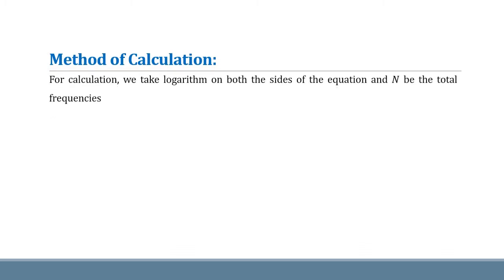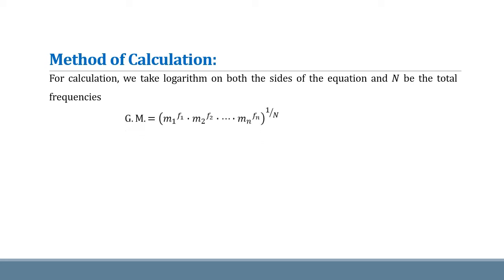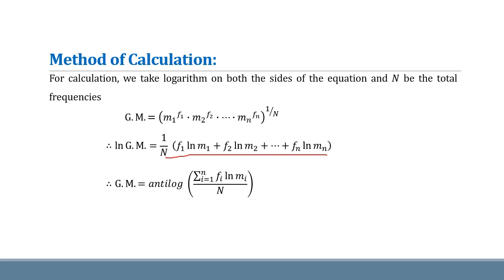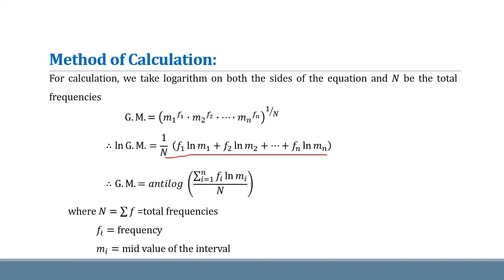Now we see the method of calculation for grouped data. For calculation, we take logarithm on both sides of the equation, where geometric mean equals this expression and capital N is the total number of frequencies. By applying properties of logarithm, we get: 1 upon N times the quantity f1 log m1 plus up to fn log mn. By taking antilog, we get the formula for geometric mean. In this formula, capital N is the summation of frequencies, and mi is the mid value of each interval.